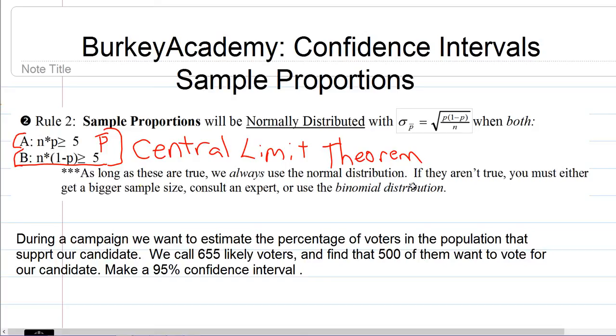As long as these are true, we always use the normal distribution. There are some fancier modifications that people do to make these things more exact, but in an introductory class, as long as these are true, use the normal distribution. If they aren't true, if your sample size is too small, then get a bigger sample size, consult an expert, or use the binomial distribution to make confidence intervals.